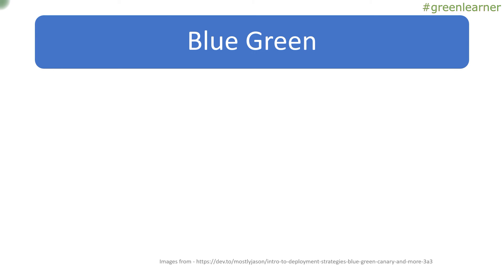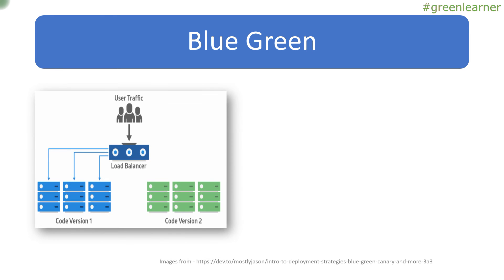Coming to the next one — blue-green deployment. Blue-green deployment is going to cost more because you have to maintain two similar production-ready environments simultaneously. We have code version 1 and code version 2. Code version 1 is serving all user traffic, and code version 2 is a similar production-like environment where the new application has been deployed. Both sets of servers — old and new — are running simultaneously, but the new application is not yet serving any traffic.